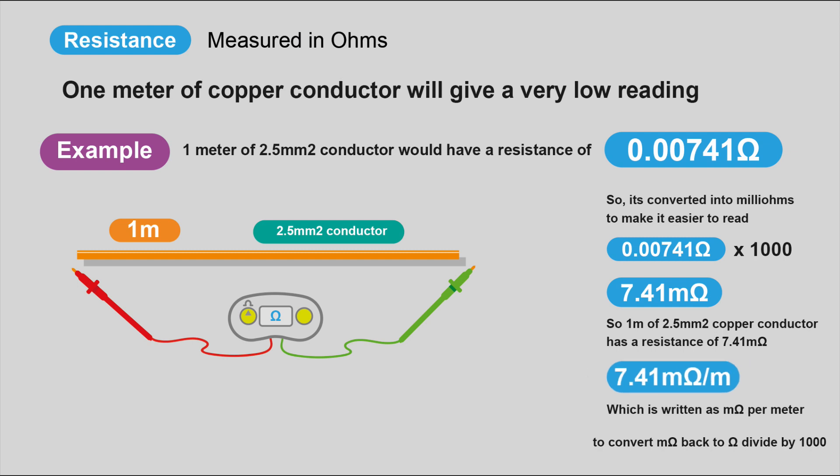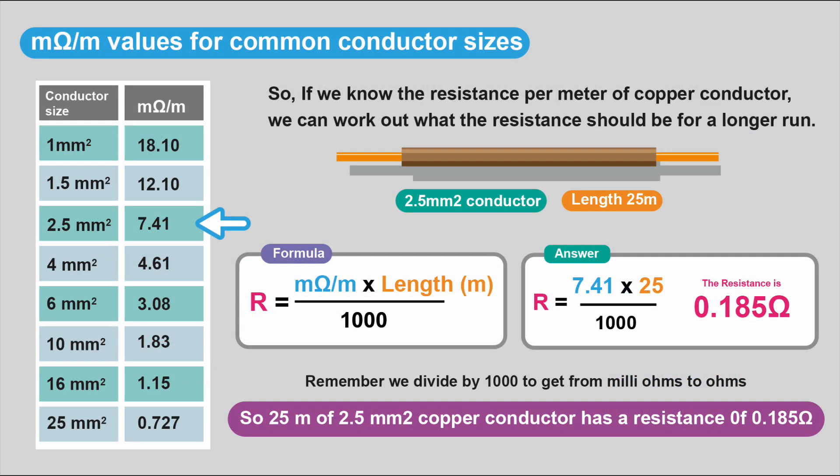If you want to convert it back, we divide it by 1,000. So if we know what the resistance is per meter of copper conductor, we can work out what the resistance should be for longer runs.